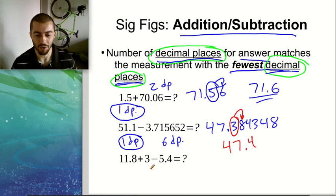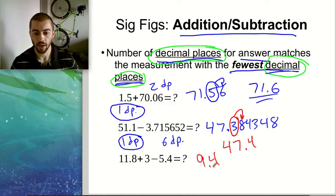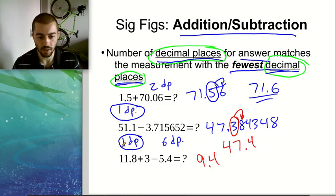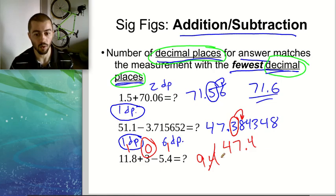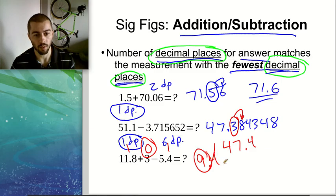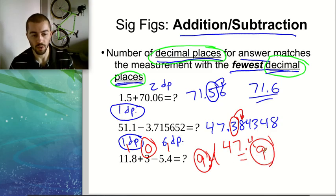For the last example, taking those same numbers and adding and subtracting instead, you should end up with 9.4. Looking at decimal places: this has 1, this has 0, and this has 1. The lowest is 0, so we want our answer to have zero decimal places — we have to chop off that 4. We look to see whether to round the 9 up or down — 4 means we round it down. So our final answer is 9, which has no decimal places, agreeing with the fewest decimal places in our numbers.